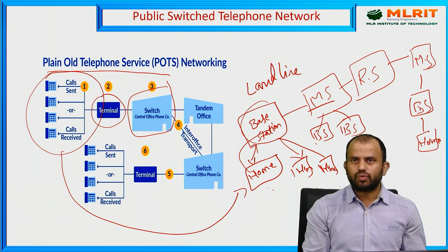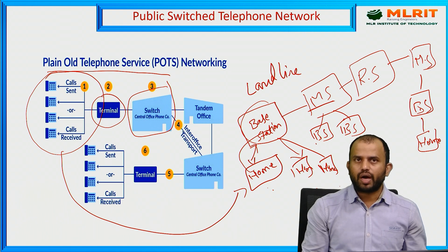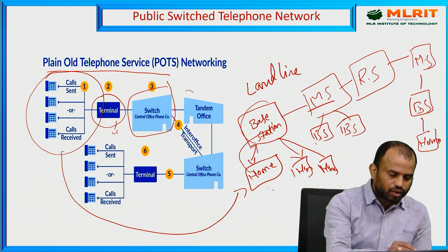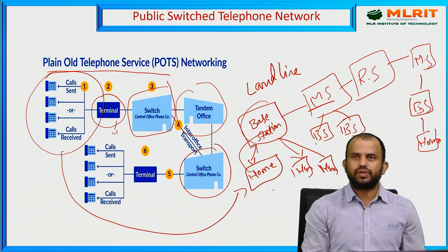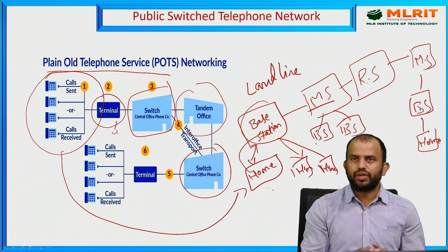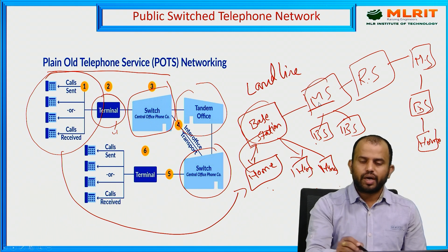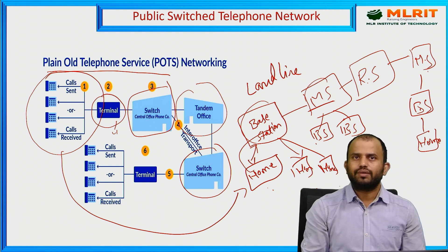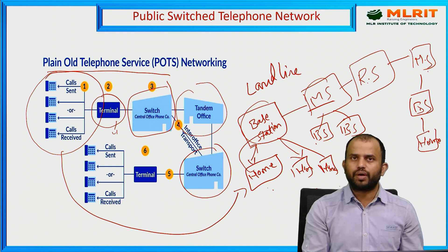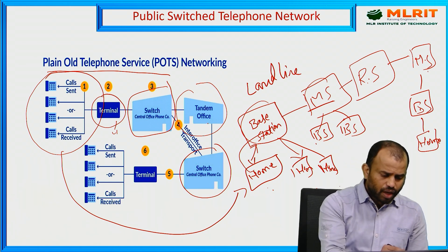The base station connects to the switching telephone network through a central office mechanism, which we call the main station. The main station, also called the central office, can handle N number of terminal nodes and base stations. From there, we connect to the tandem office, which acts as a bridge between one central switching office and another — used especially for STD and ISD level calls between different area networks.